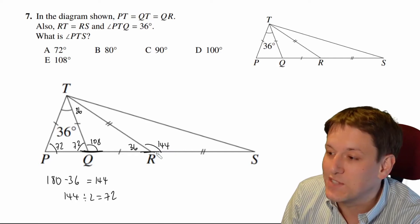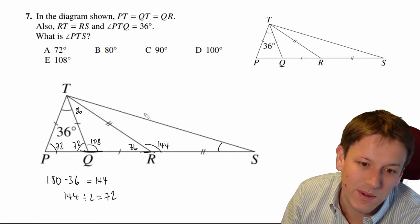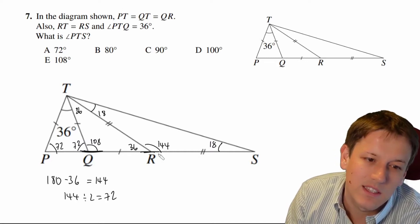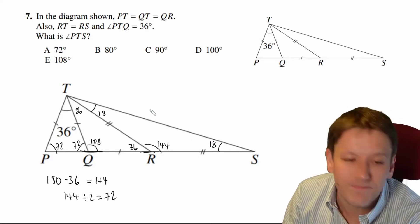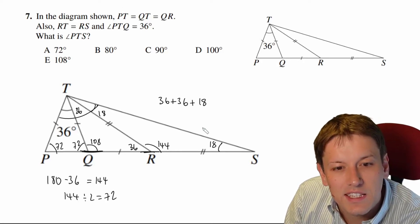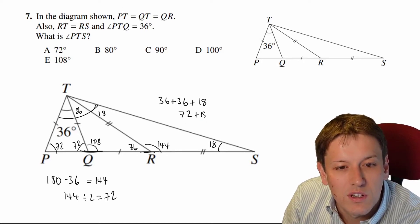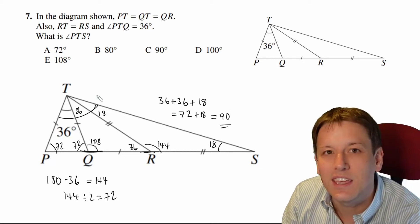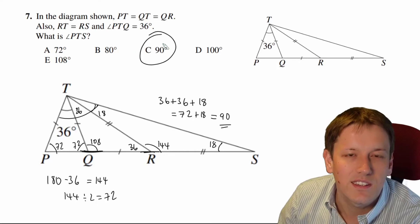And then 180 minus 144 gives me 36 again, so these two add up to give 36, so they must both be 18. Again, because this is isosceles, those two angles are equal. So the total angle that we're looking for here is 36 plus 36 plus 18, so that's 72 plus 18, which is 90. So in fact this angle here is a right angle, and the answer is C.